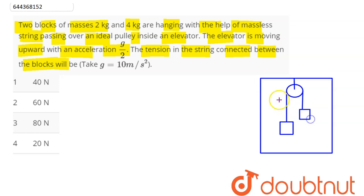So one mass is 4 kg and other mass is given here as 2 kg. Now we can say here since the elevator is accelerating upward with an acceleration of g by 2...